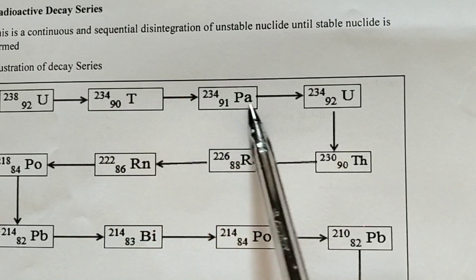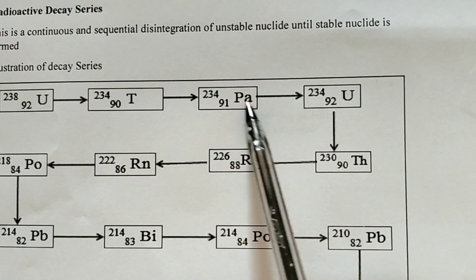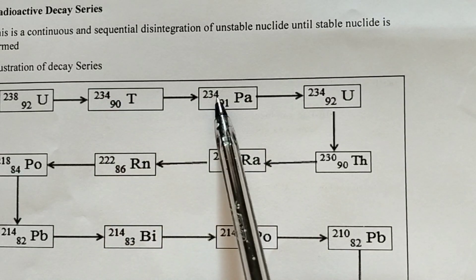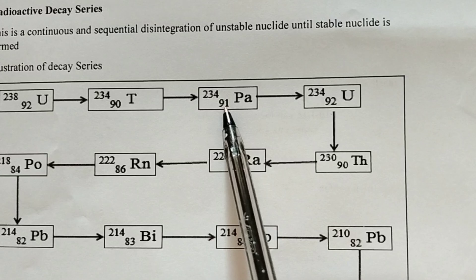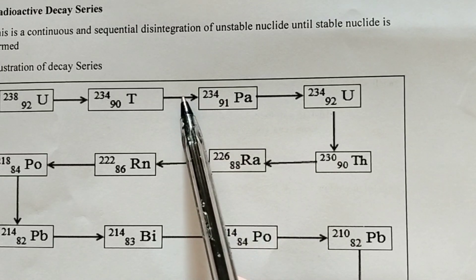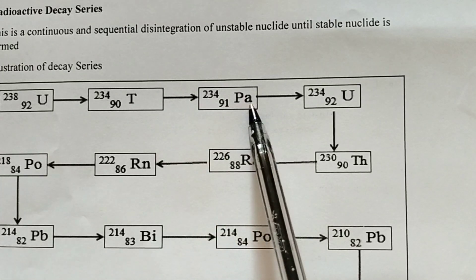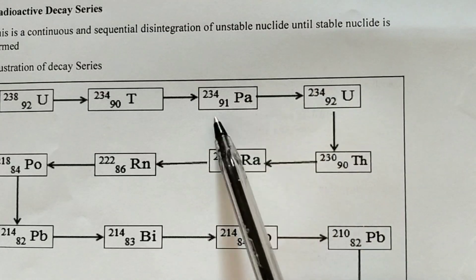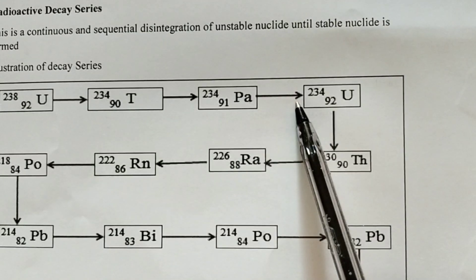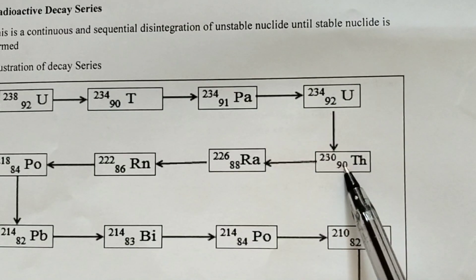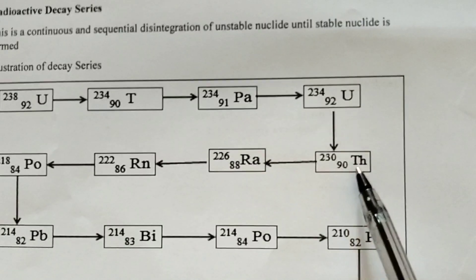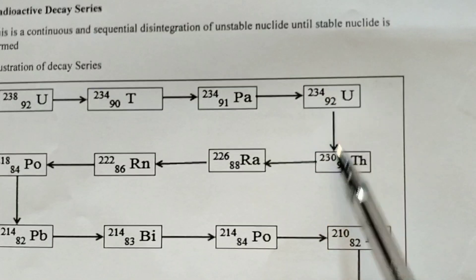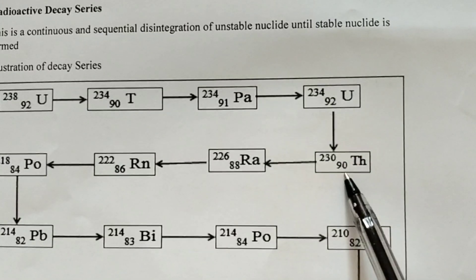Here we have Th disintegrates to form Pa with a mass number of 234, atomic number 91. The mass number remains the same but the atomic number has increased by 1, therefore this is 1 beta particle. It undergoes disintegration again to form U with a mass number of 234, atomic number 92 — again 1 beta particle. It disintegrates again to form Th with a mass number of 230, atomic number 90; the mass number decreases by 4, the atomic number decreases by 2, therefore this is 1 alpha particle.